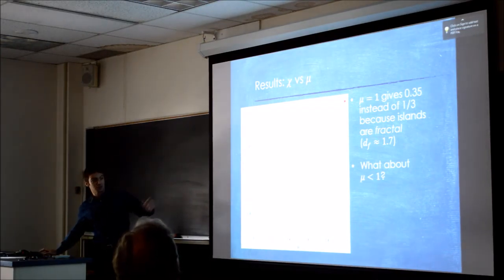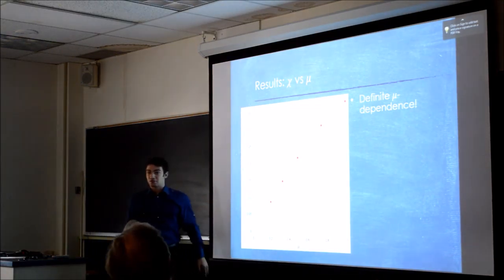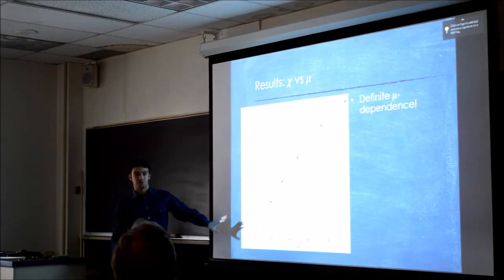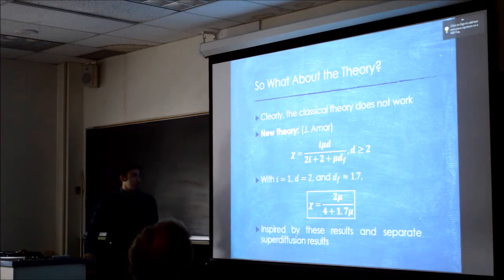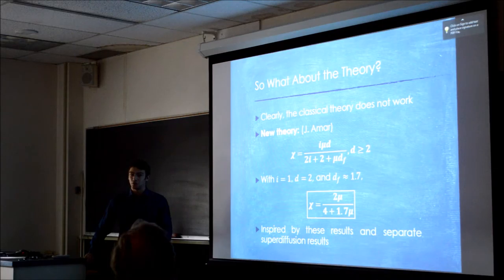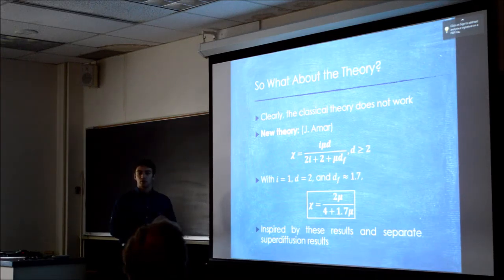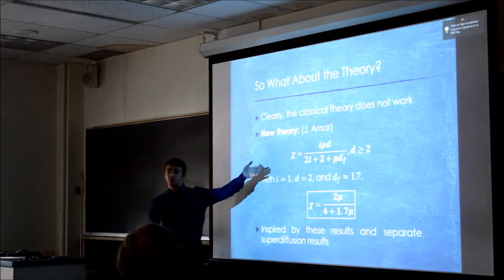So now what about mu less than one? This is what I spent the whole summer coming up with. And this is what we get. So definitely there's a mu dependence, right? This is not a constant. So definitely this doesn't fit the old theoretical picture. So what do we do? Classical theory doesn't work. The short answer is Dr. Amor came up with a new theory while I was working on this. He kind of came up with it at the same time and also motivated by these results and motivated by results for super diffusion that had been worked on before.